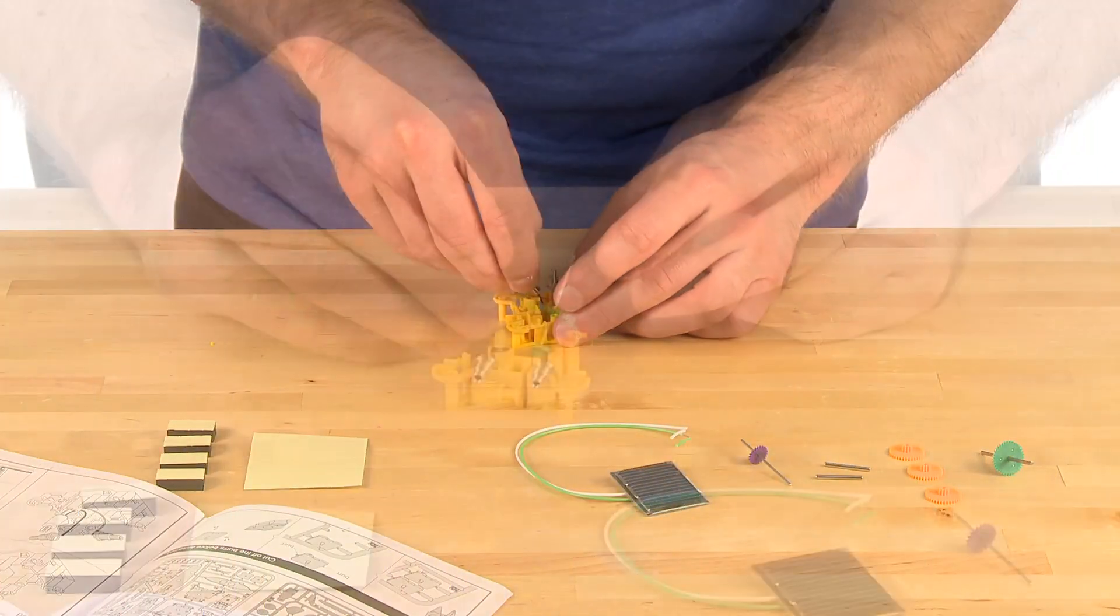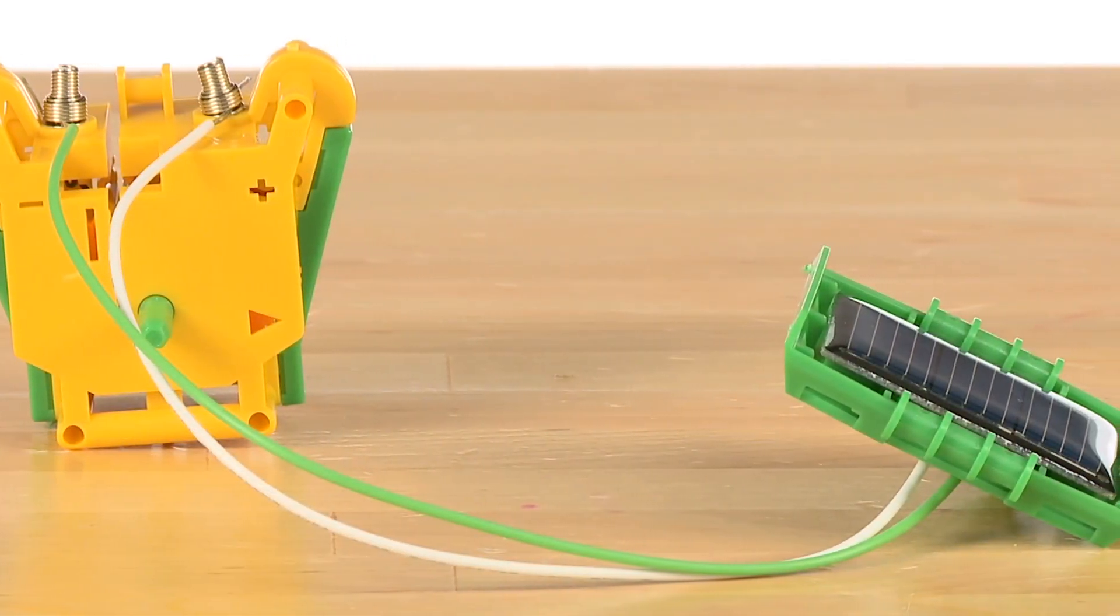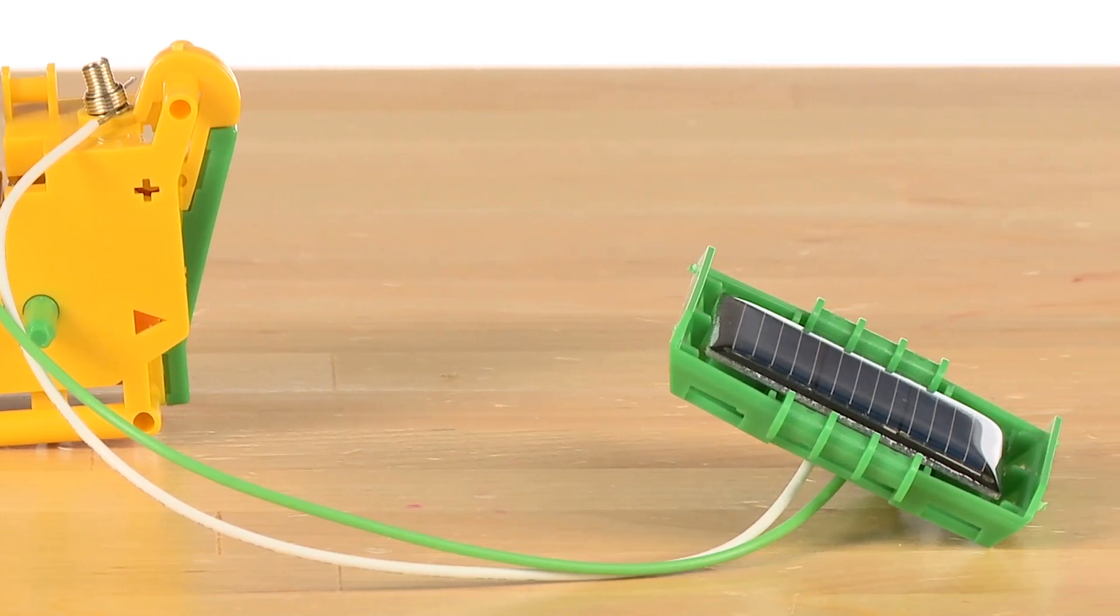Start by assembling the gearbox and solar module. Once you have successfully constructed these components, you can breeze through the construction of the models. Now, let's take a look at each of the models in action.